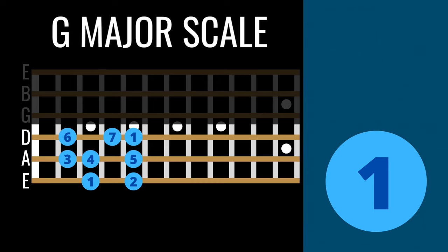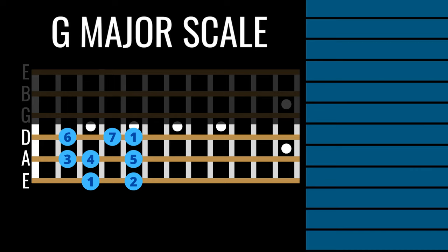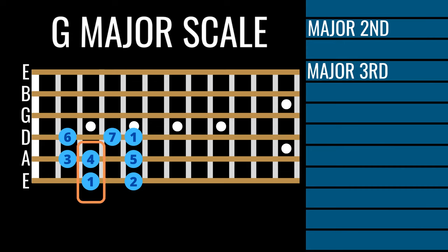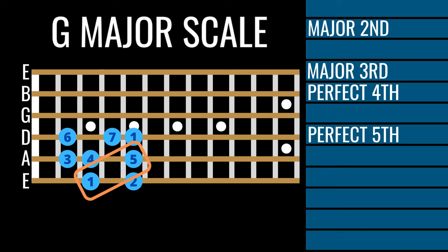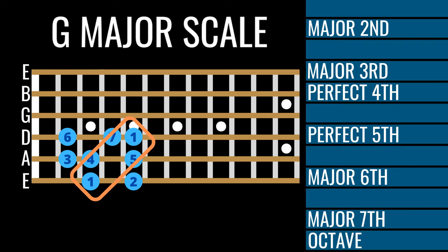Now let's compare each note of the scale to the one — you could also call this the tonic, but for simplicity's sake let's stick with one. The distance between the first and second note is a major second; the first and third, a major third; the first and fourth, a perfect fourth; the first and fifth, a perfect fifth; the first and sixth, a major sixth; the first and seventh, a major seventh; and the first and last note, as they are the same note an octave apart, we would call an octave. This gives us seven of our 12 intervals.